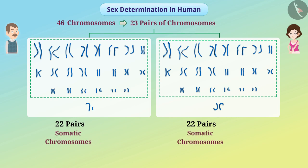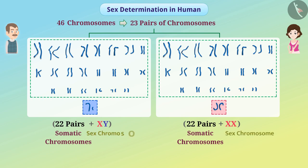But one pair in the 23 pairs of chromosomes differs in male and female. In females, both chromosomes of this pair are of normal size, which we denote by XX. But in males, the chromosomes of this pair are different — the chromosome of normal size is represented by X and the chromosome of smaller size is represented by Y. The sex of the zygote is determined on the basis of these X and Y chromosomes. Therefore, we call these chromosomes the sex chromosomes. The pair of sex chromosomes in males is XY and in females it is XX.